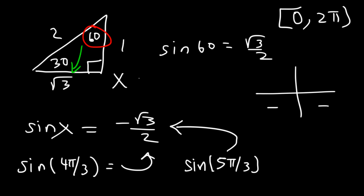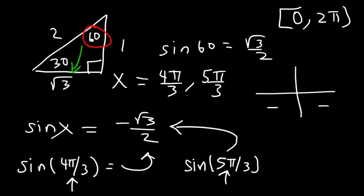So x is equal to the values in this range. x = 4π/3 and x = 5π/3, which are both within [0, 2π]. These are the answers to this problem.